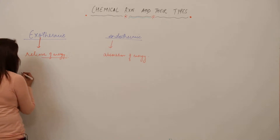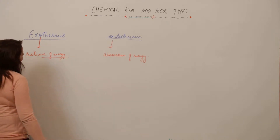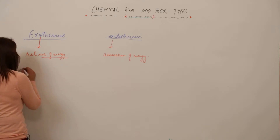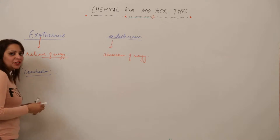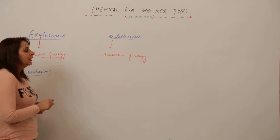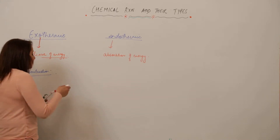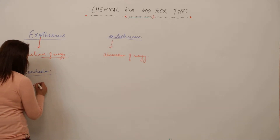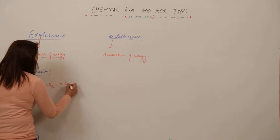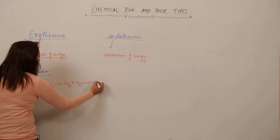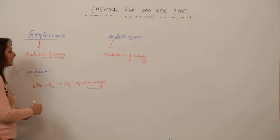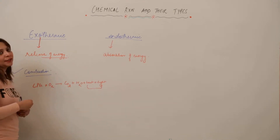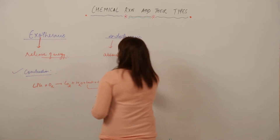An exothermic reaction you come across in daily life is combustion — the burning of anything. For example, if you are burning LPG at home, you get CO₂, water vapor, heat and light. This leads to the evolution of energy along with the products, which is why it comes under the category of exothermic reaction.